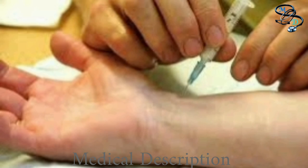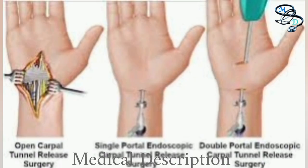If carpal tunnel syndrome is caused by rheumatoid arthritis or another inflammatory arthritis, treating the arthritis may reduce symptoms. Surgery may be appropriate if symptoms are severe or do not respond to other treatments. The goal of carpal tunnel surgery is to relieve pressure by cutting the ligament pressing on the median nerve. Surgery may be performed using two different techniques: endoscopic surgery or open surgery.